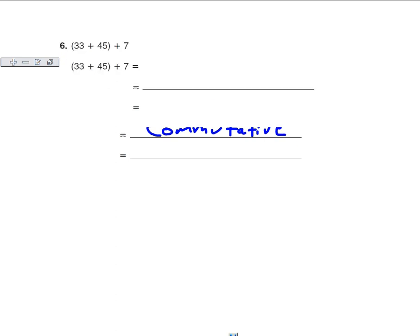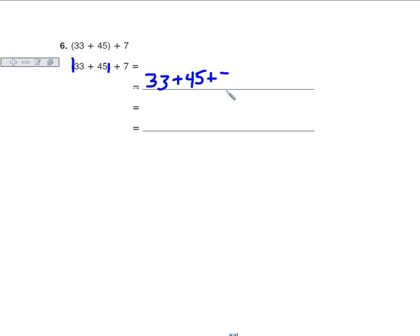Let's look at another one. We have 33 plus 45 plus 7. And this is the associative property of grouping. But I can take these off and rewrite this as 33 plus 45 plus 7. I could have grouped them differently, and that would be the associative property. I'm grouping it differently. That's the associative.